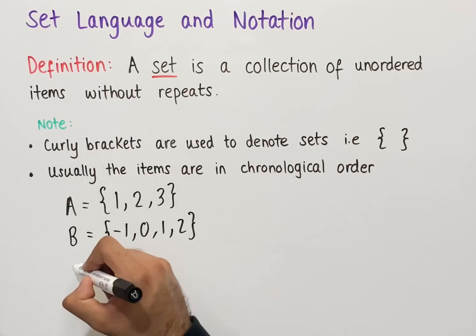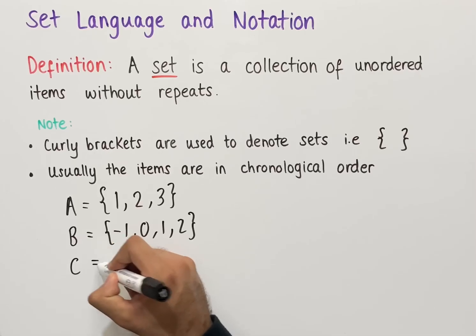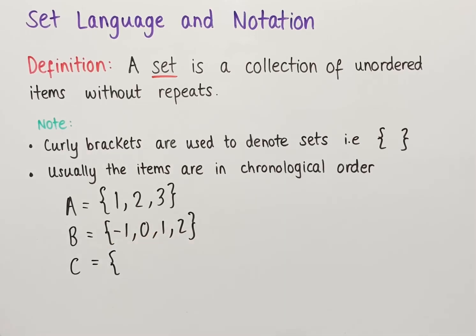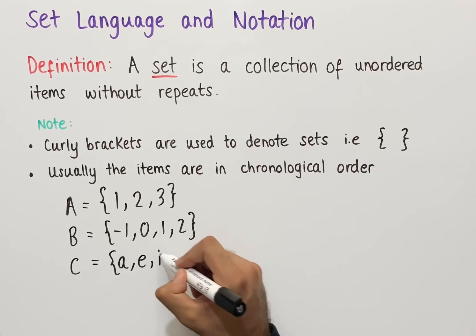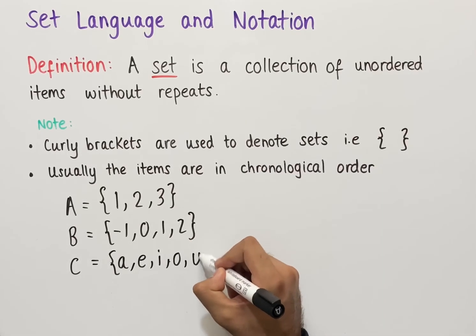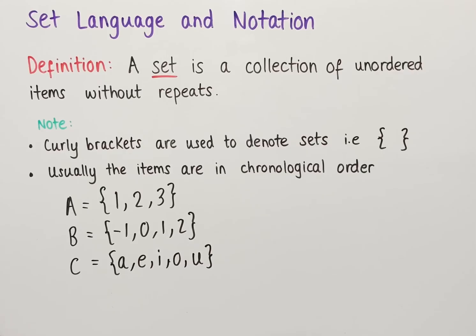We might also use letters, so capital C. Let's call that the following set. If we have A, E, I, O, and U, then these are vowels within the alphabet and this set has five items in it.